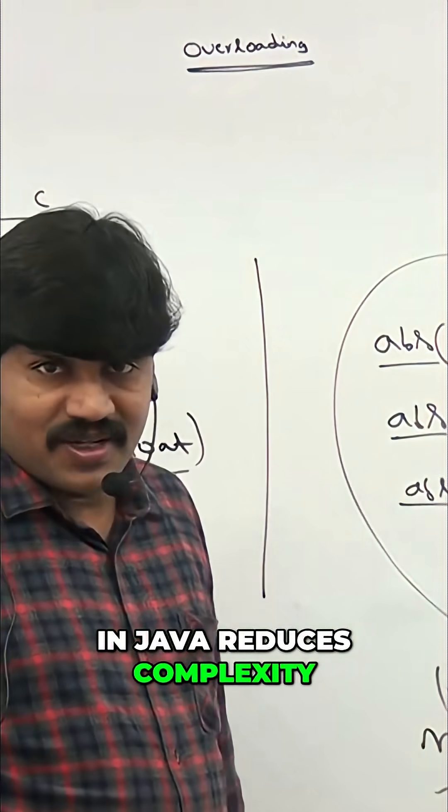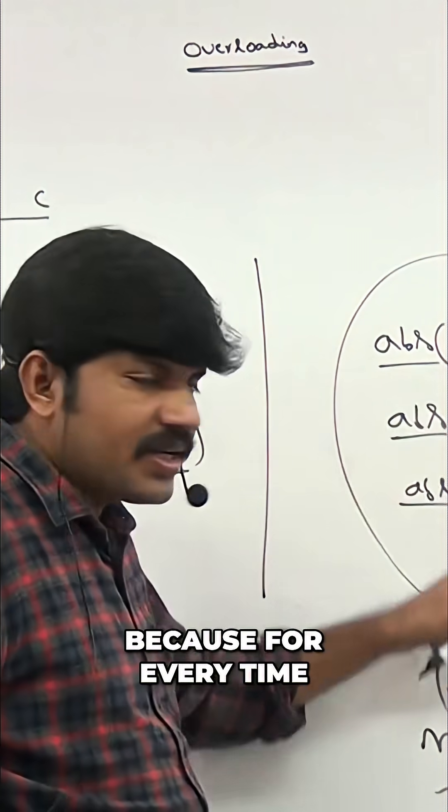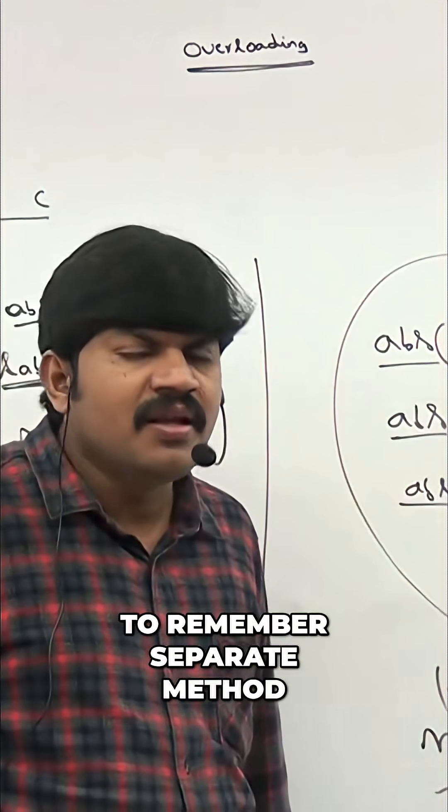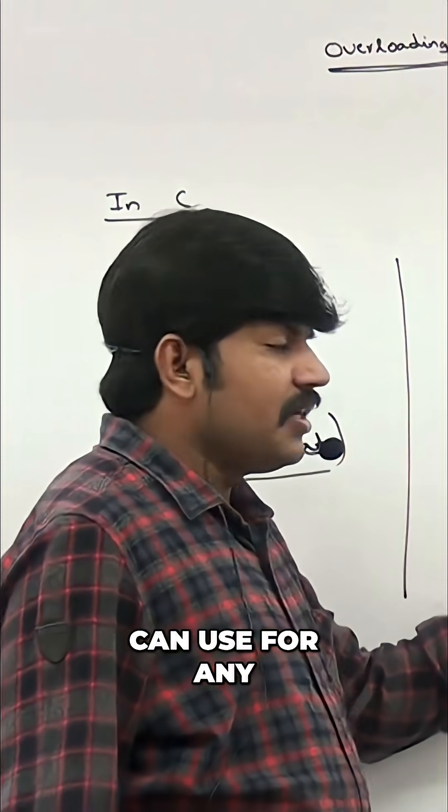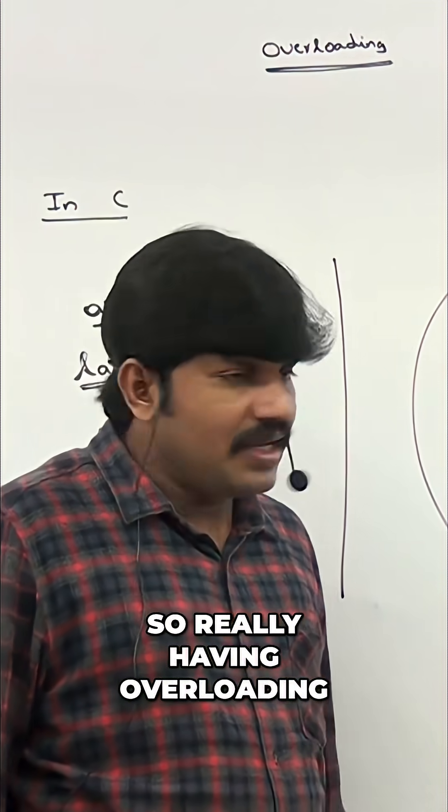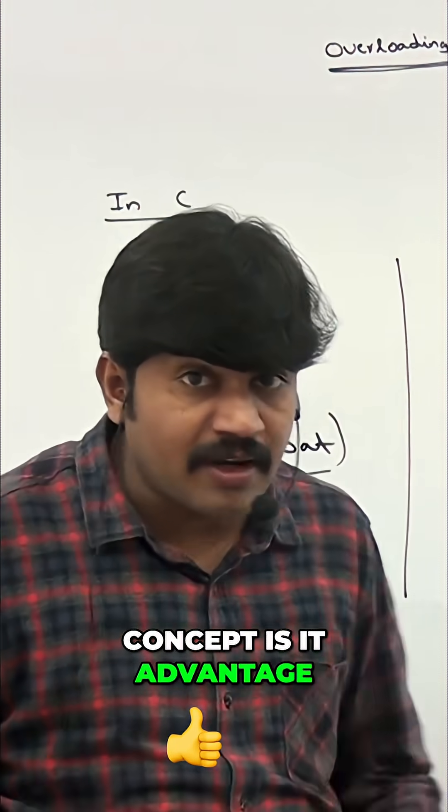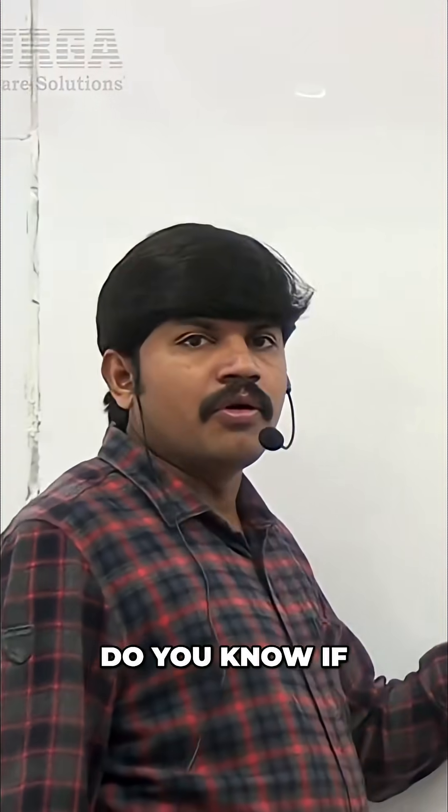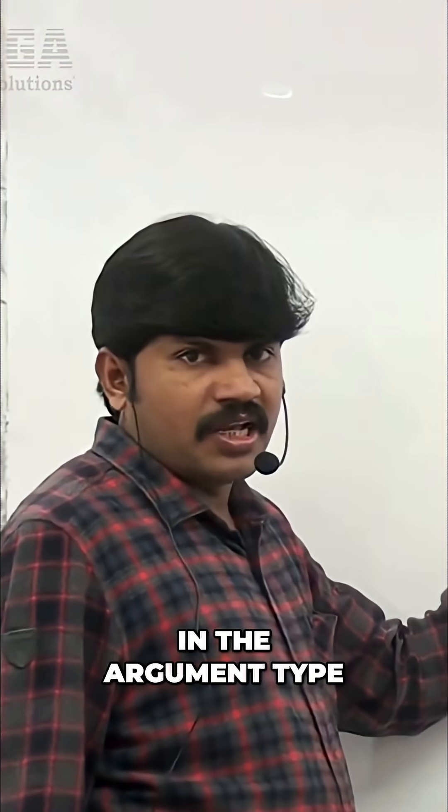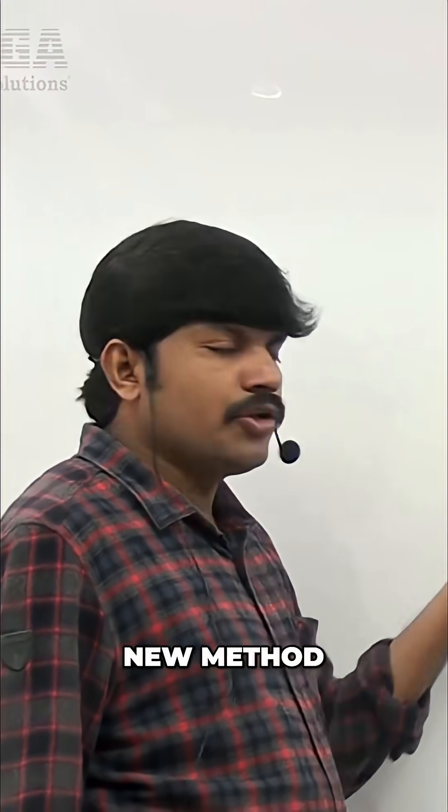Method overloading reduces complexity because we are not required to remember separate methods. A single method name we can use for any type of argument. So having overloading concept is an advantage feature in Java. But in C language, if there is a change in the argument type, compulsorily we should go for new method. Unnecessary complexity of programming is going to increase.